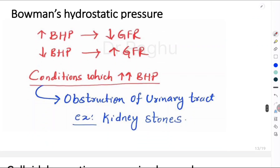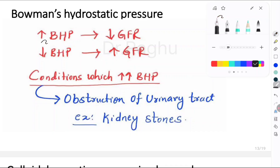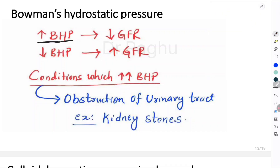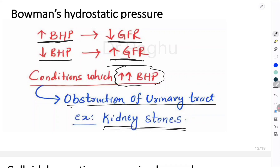Next let's understand the hydrostatic pressure in the Bowman's capsule. Whenever the Bowman's capsule hydrostatic pressure increases, that causes a reduction in GFR. Whenever it decreases, that causes an increase in GFR. One very important condition that increases Bowman's capsule hydrostatic pressure is obstruction of the urinary tract caused by kidney stones. Whenever there is a kidney stone, it increases Bowman's capsule hydrostatic pressure, which results in a decrease in the glomerular filtration rate.